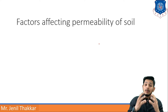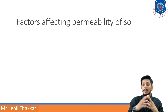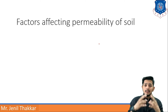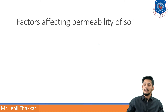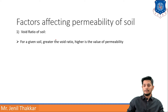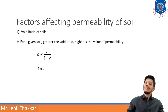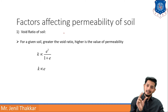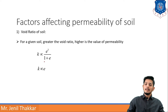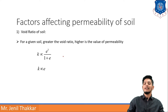Now let us understand the factors affecting permeability of soil. The first factor is void ratio. For a given soil, greater the void ratio, higher is the value of permeability. k is proportional to e³/(1+e), or we can say k is proportional to e².